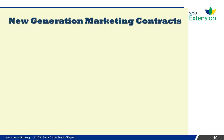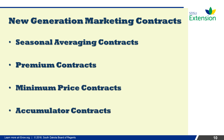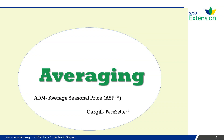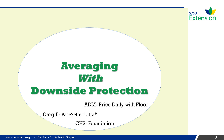Specific new generation marketing contracts we discuss here include seasonal averaging contracts, premium contracts, minimum price contracts, and accumulator contracts. Averaging contracts are typically just an average of daily futures closes over a given time period to determine a contract price. There are also averaging contracts that include downside price protection. These contracts are similar to buying a put and then selling a set amount of bushels each day, usually an equal amount.